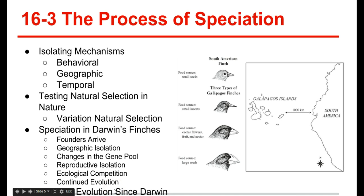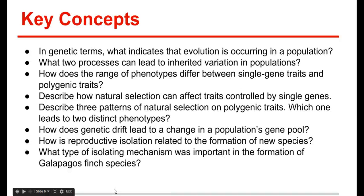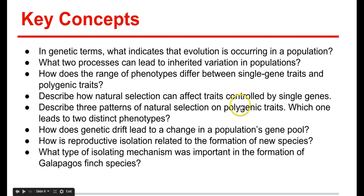Studying evolution since Darwin: one limitation is that we have not seen the formation of new species in our lifetime, simply because it hasn't been a long enough time. Key concepts review: In genetic terms, what indicates that evolution is occurring in a population? What two processes can lead to inherited variation in populations? How does the range of phenotypes differ between single gene traits and polygenic traits? Describe how natural selection can affect traits controlled by single genes. Describe three patterns of natural selection on polygenic traits — which one leads to two distinct phenotypes? How does genetic drift lead to a change in a population's gene pool? How is reproductive isolation related to the formation of new species? And what type of isolating mechanism was important in the formation of the Galapagos finch species? That's it for chapter 16.